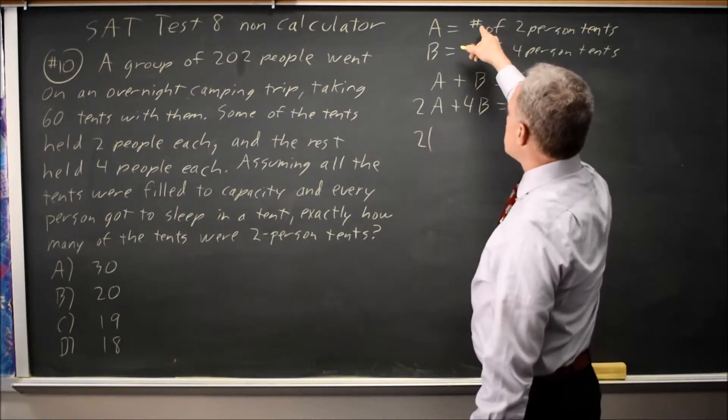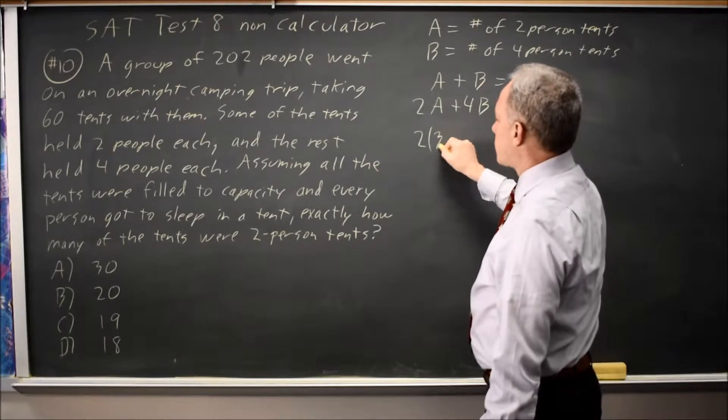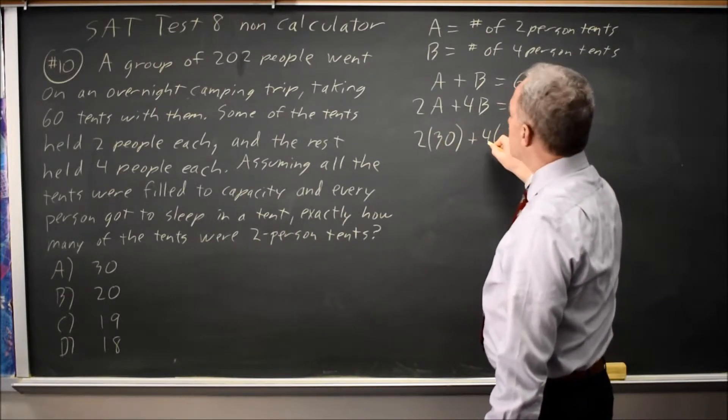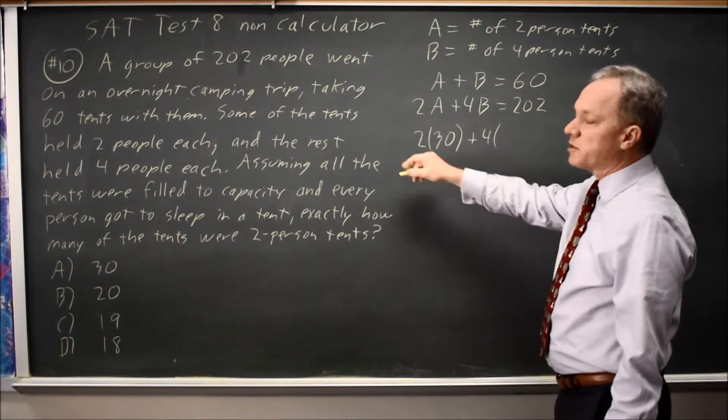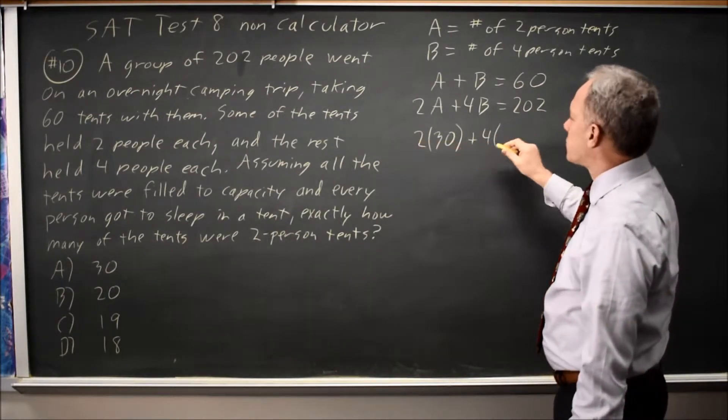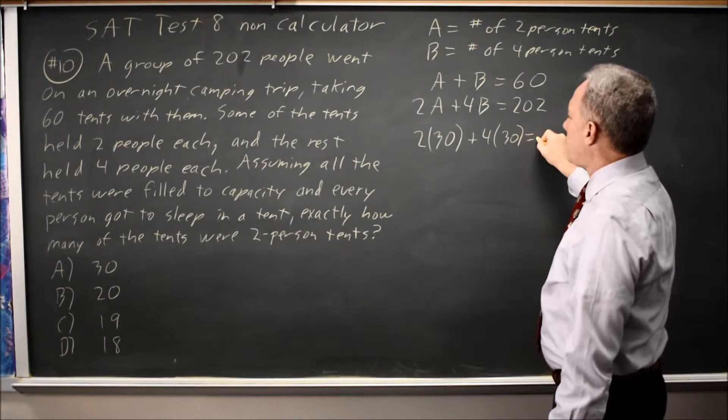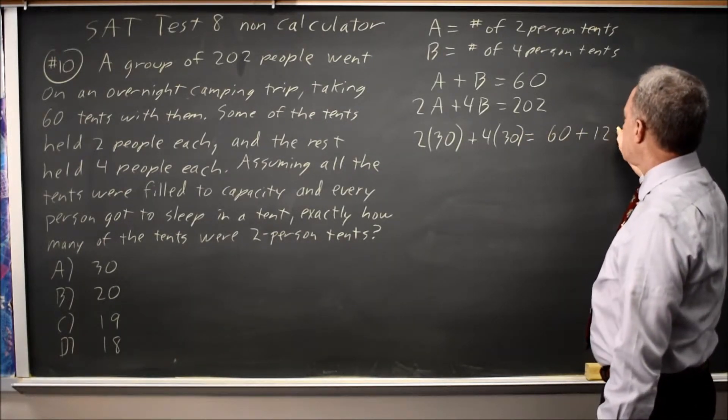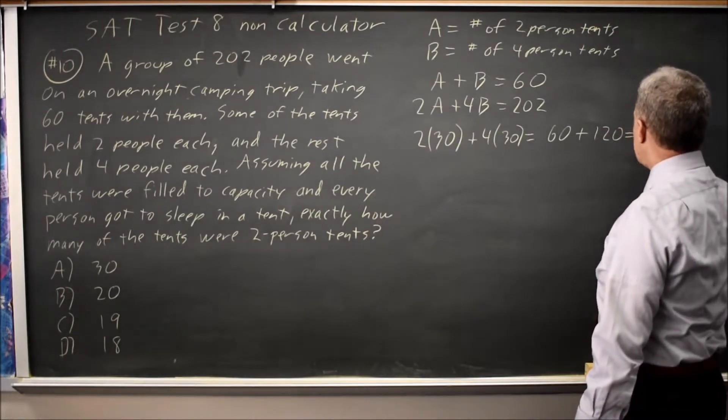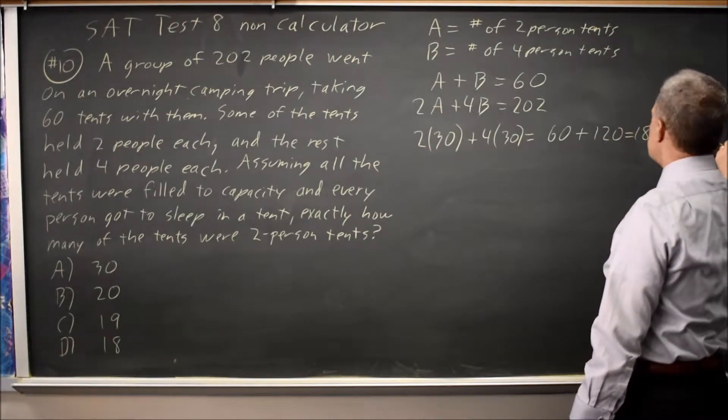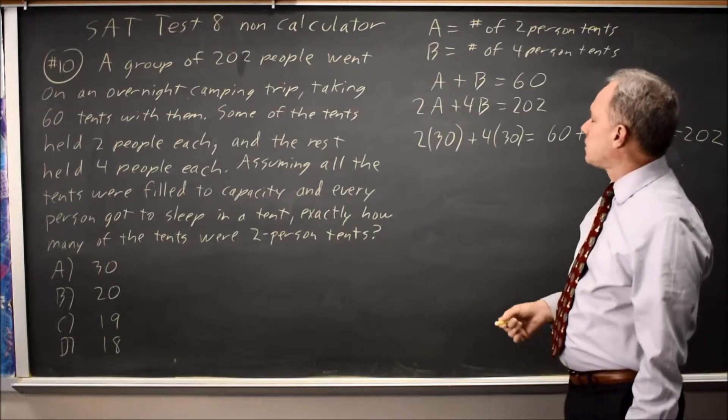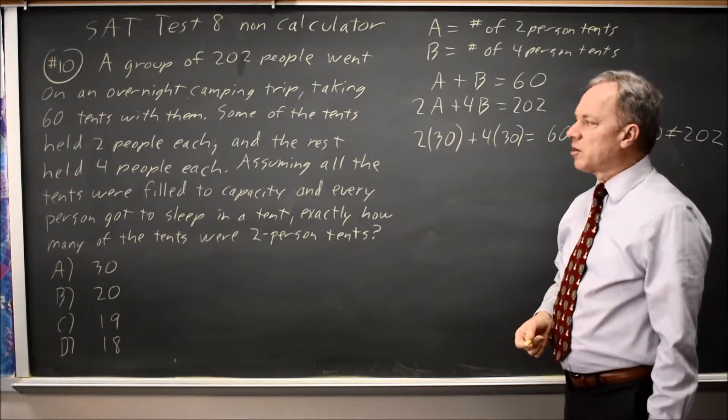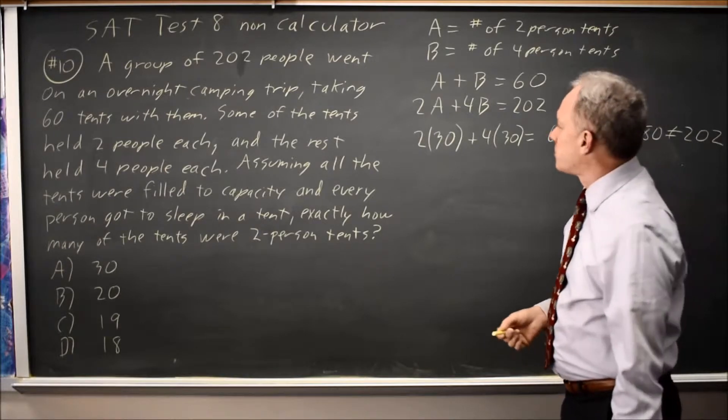Since the number of two-person tents is A, that would be twice 30 for choice A plus four times the number of four-person tents. There are 60 tents, 60 minus 30 is 30, and that gives me two times 30 is 60, four times 30 is 120, equals 180, and that is not 202. If I only had 34-person tents and 32-person tents, not all the people could sleep in a tent, somebody sleeping in the dirt.